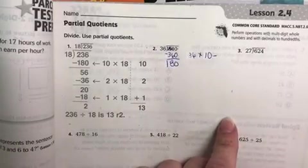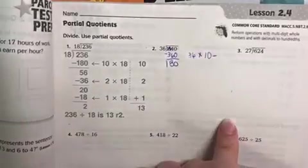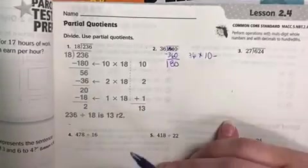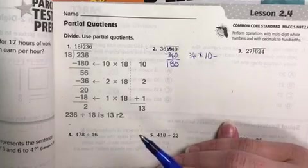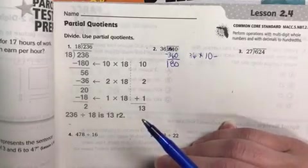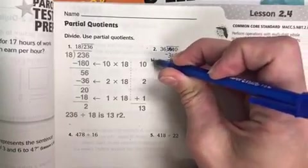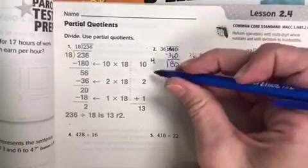The strategy that I use to figure that out is I want to find a compatible number that will help me to estimate about how many times can 36 go into 180. I don't know my multiples for 36, but my nice friendly number that I do know is my 40s, and I know my 40s because I know my 4s. So I could list 4...